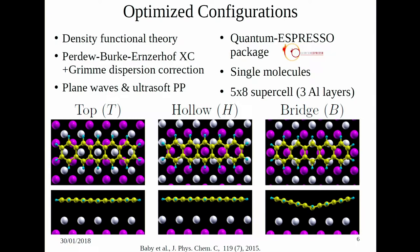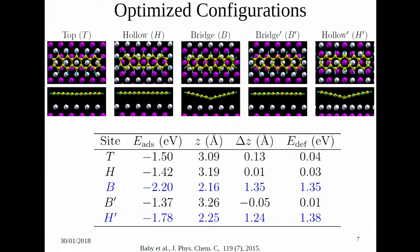I started with finding the most stable configuration of pentacene on aluminum 001. The high symmetry sites — top, hollow, and bridge — were considered, along with bridge-dash and hollow-dash as two additional ones. Bridge-dash is obtained from bridge by rotating the molecule or substrate by 90 degrees, and hollow-dash by rotating from hollow by 45 degrees.